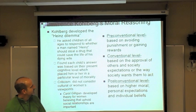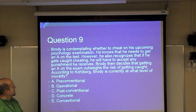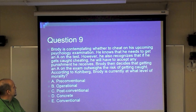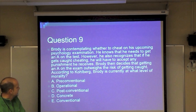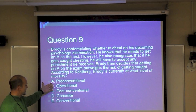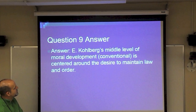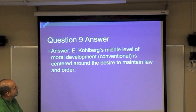Carol Gilligan developed a theory for women, believing morality is about upholding social relationships — women often speak in terms of 'we,' 'us,' and 'our,' basing relationships on group happiness. Quiz example: Brody considers cheating on a psychology exam, knows he needs an A, recognizes that if caught he'll accept punishment, but decides cheating outweighs the risk of getting caught. According to Kohlberg, that's the conventional level — he doesn't want to cheat primarily because he doesn't want to be called a cheater, which is being consistent with what others expect.